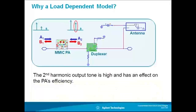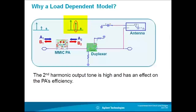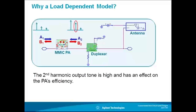Here's another situation. Let's say the gamma load of the second harmonic on the PA is generating some distortion that interferes with and degrades the efficiency of the PA and battery life. To fix this problem, designers need to know the exact magnitude and phase content of this second harmonic tone so they can filter it out.